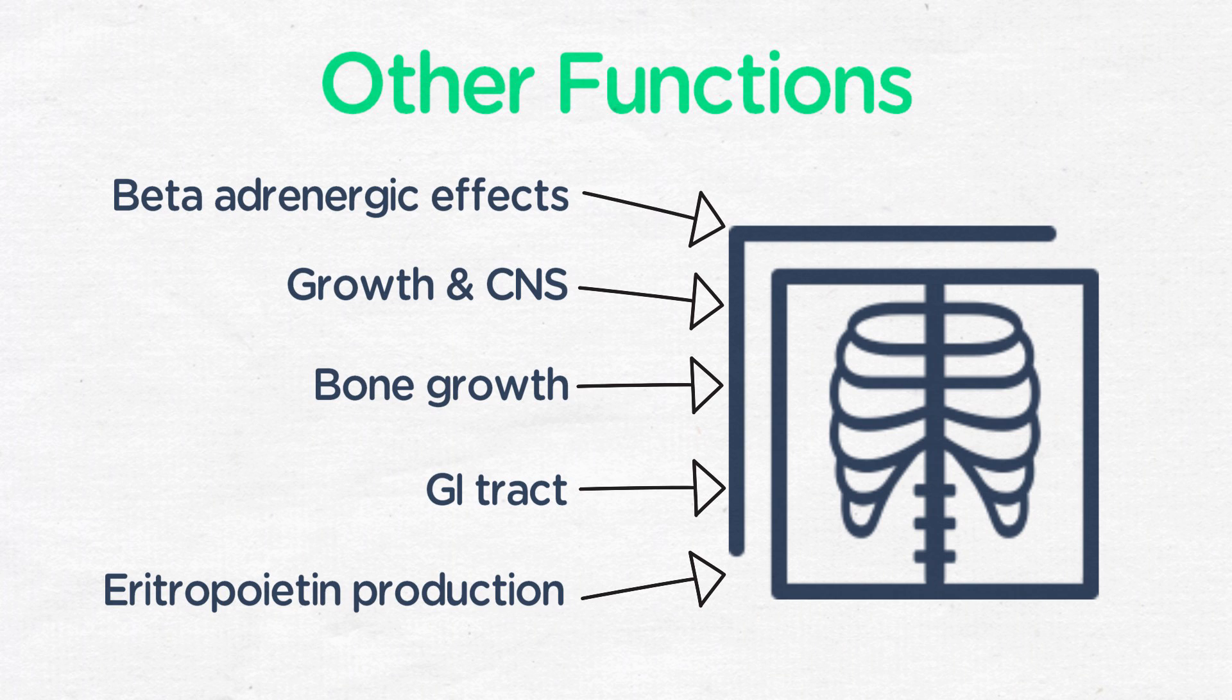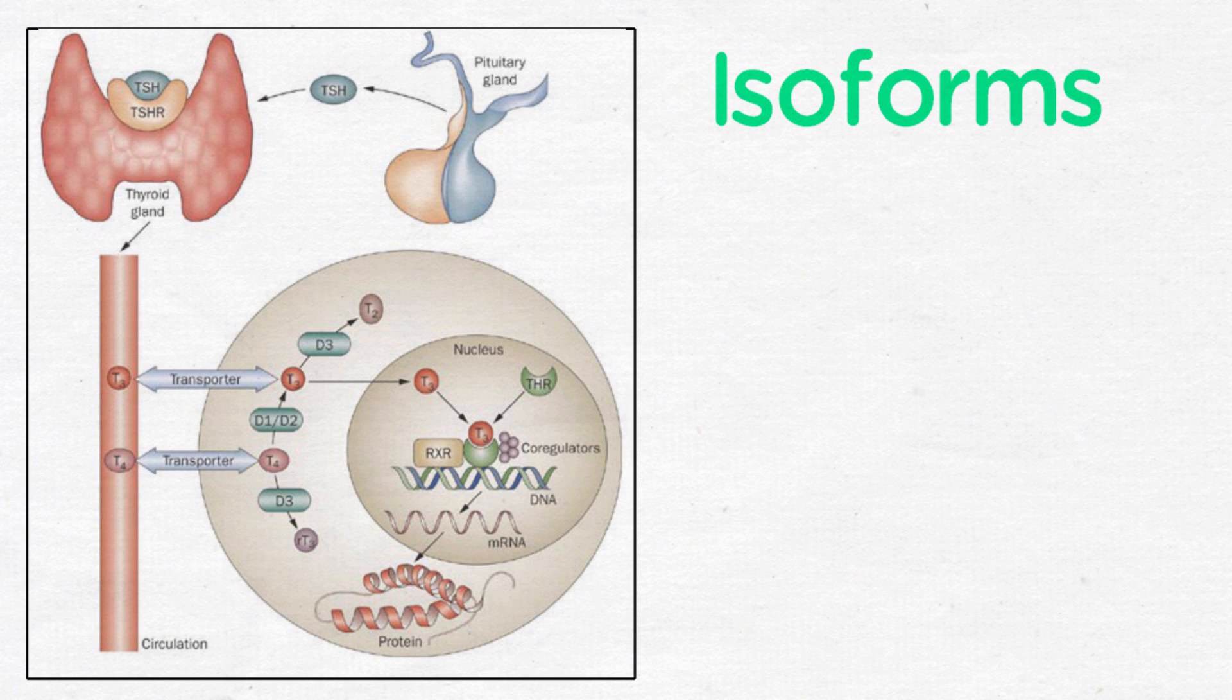Thyroid hormones exert all its effects in different tissues through the thyroid hormone receptors. These receptors belong to the nuclear receptor superfamily, and there are various isoforms. Even without the ligand, these receptors are bound to DNA.